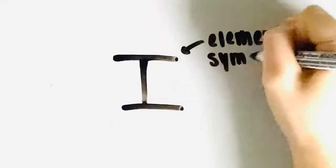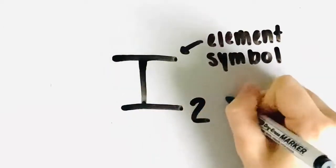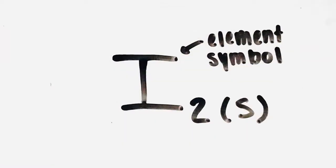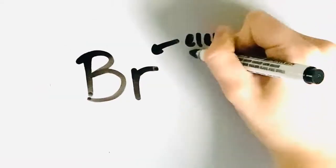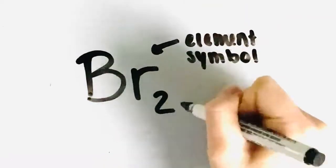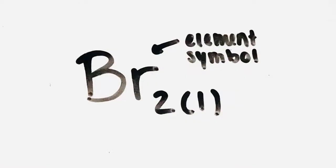Iodine would be written as I, its element symbol, with a subscript of 2 because it's diatomic, and a subscript of S in brackets to show that it's a solid. Finally, bromine would be written as Br, its element symbol, with a subscript of 2 because it's diatomic, and a subscript of L in brackets to show that it's a liquid.